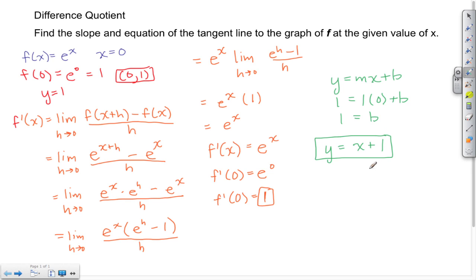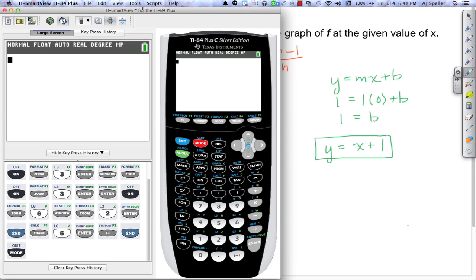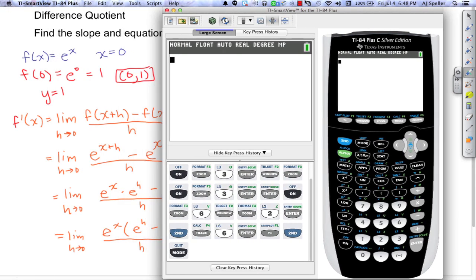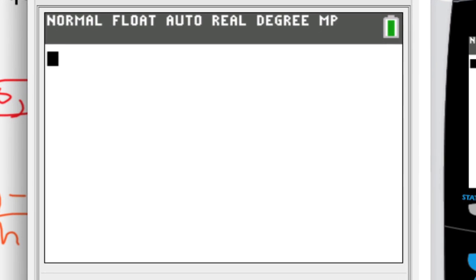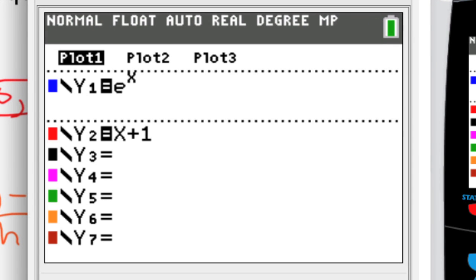And now let's pull up the calculator to verify these answers. I've already put in the functions here. E raised to the x is the original equation, and the equation for the tangent line is x plus 1.